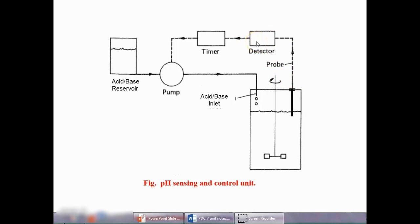For different pH values, we will have different currents. Based on the current strength or signal, it will determine the actual pH present in the fermentation process. Then it will compare that value with the required set point. If any deviation is detected, immediately it will activate the pump.